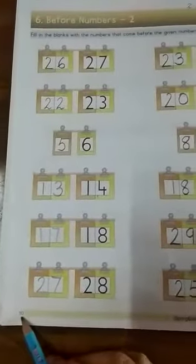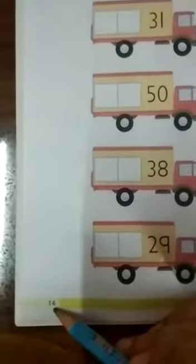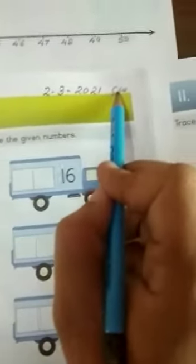Now children, after completing page number 10, turn and open page number 14. Here also put today's date 2-3-2021 and write down CW.